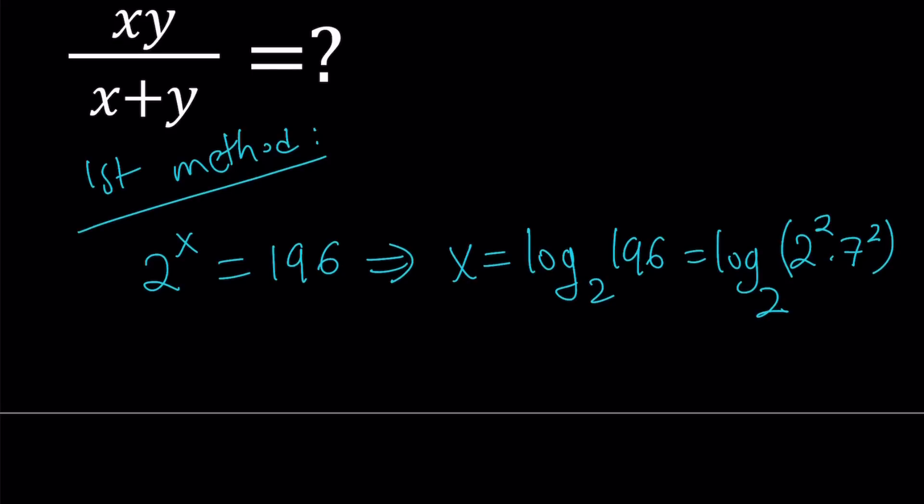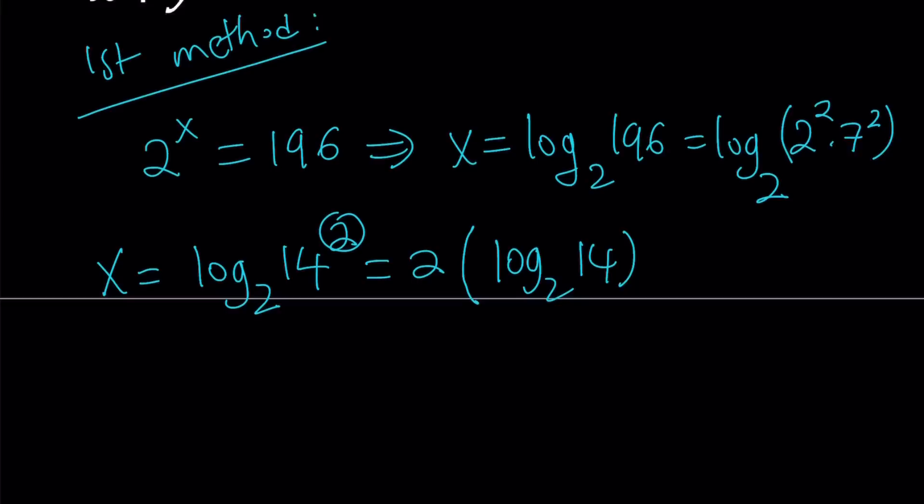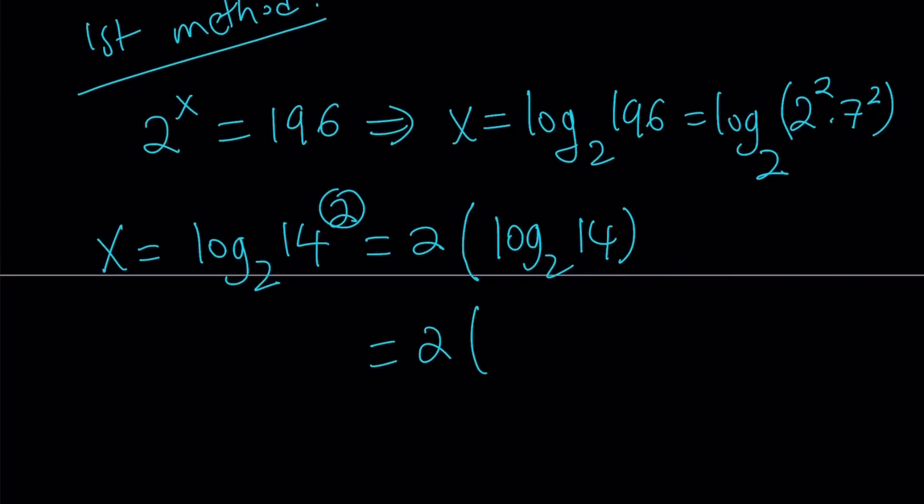Now let's go ahead and write x as log of 14 squared, of course. And then, let's go ahead and put the 2 in the front. I mean, either way you can write, it doesn't really matter. But I think this is a little better. So I'm going to move the 2 to the front. And inside, I'm going to have log 14. Now log 14 can be broken down into log 2 and log 7. Of course, I'm always using base 2 here, needless to say, right?